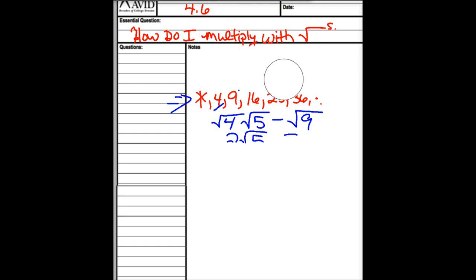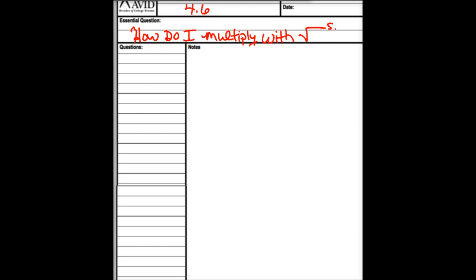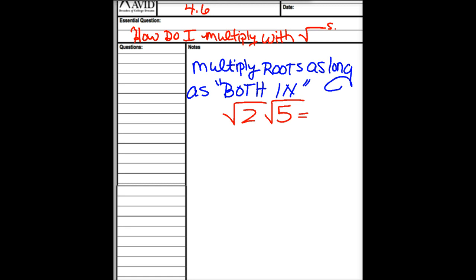For multiplication, you can multiply roots as long as you have both in. What does that mean? What I mean by both in is root 2 in the root and root 5 in the root is root 10. We use the property that says the square root of A times B, you can split them up, you can also put it back together. So when both are in, we're good to go. And root 10 doesn't simplify, so it's done.